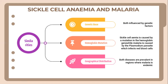Let's move on to sickle cell anemia and malaria. The similarities are divided into three categories: one is more on genetic basis, second more on hemoglobin mutations, and third more on geographical distribution. Both sickle cell anemia and malaria are influenced by genetic factors. In terms of hemoglobin mutations, sickle cell anemia is caused by a mutation in the hemoglobin gene. Meanwhile, malaria is caused by the plasmodium parasite, which infects red blood cells. And in terms of geographical distribution, both diseases are prevalent in regions where malaria is endemic.